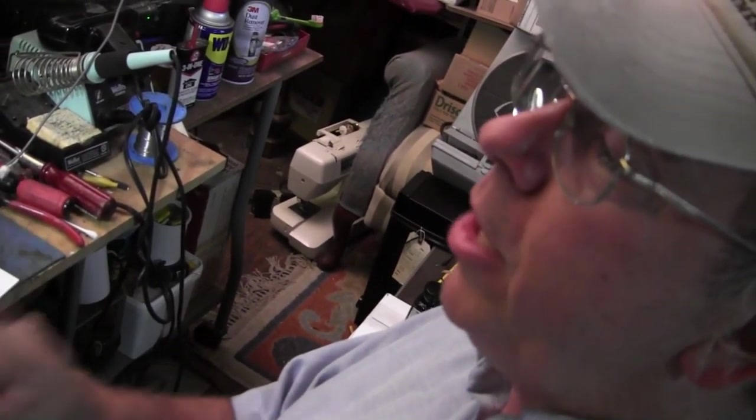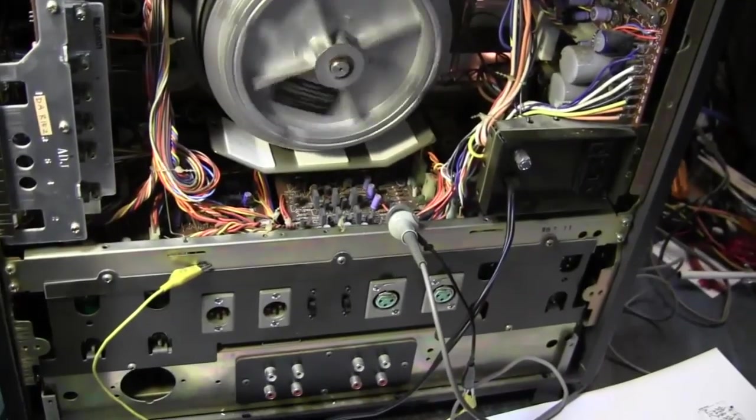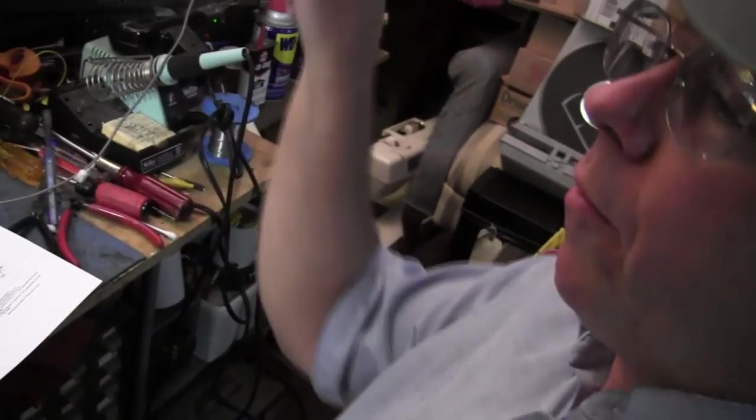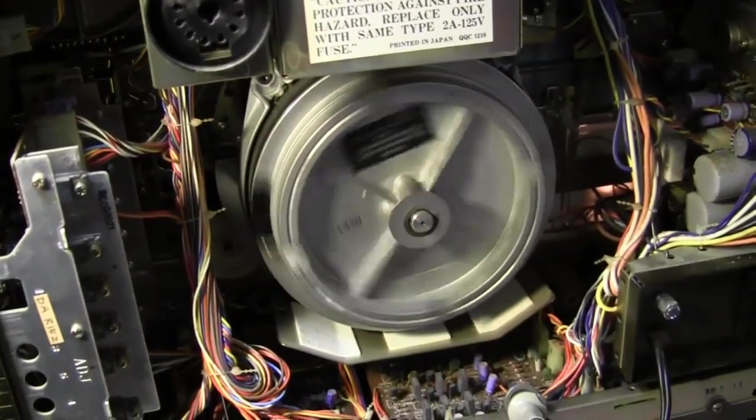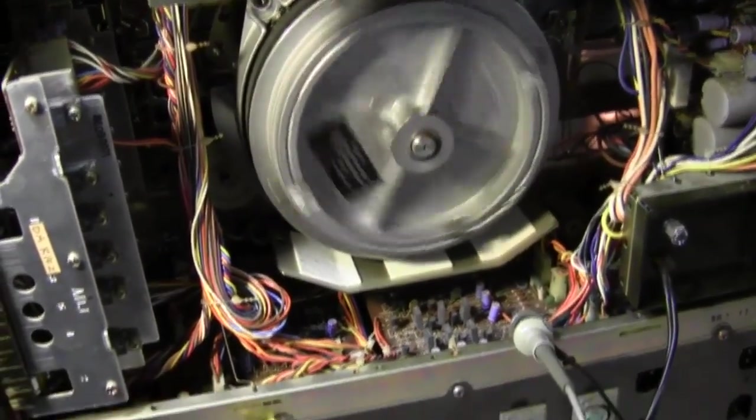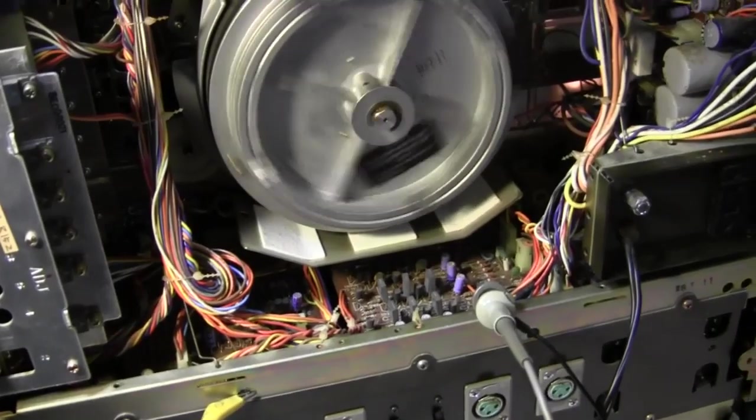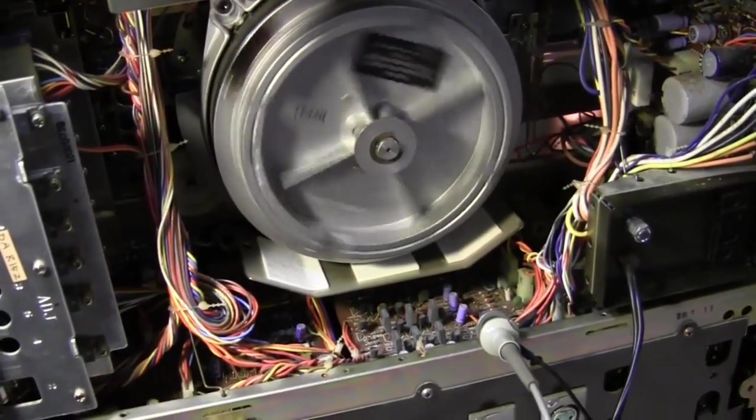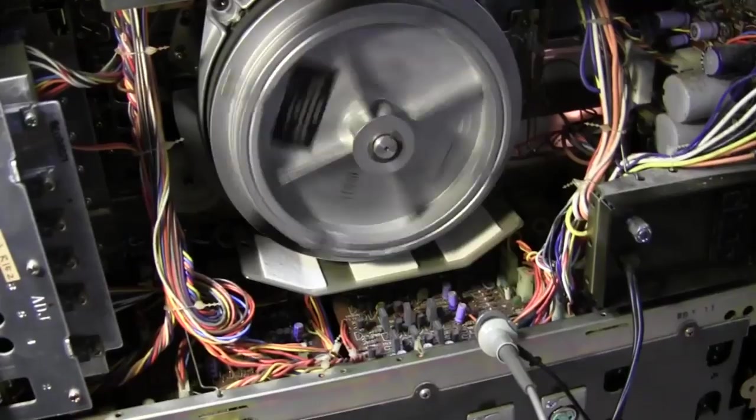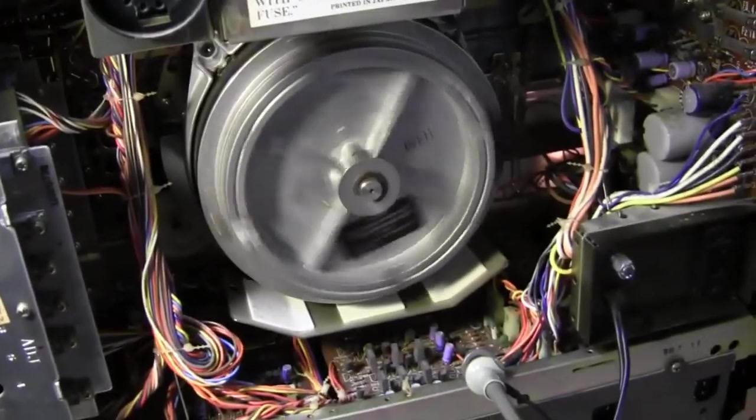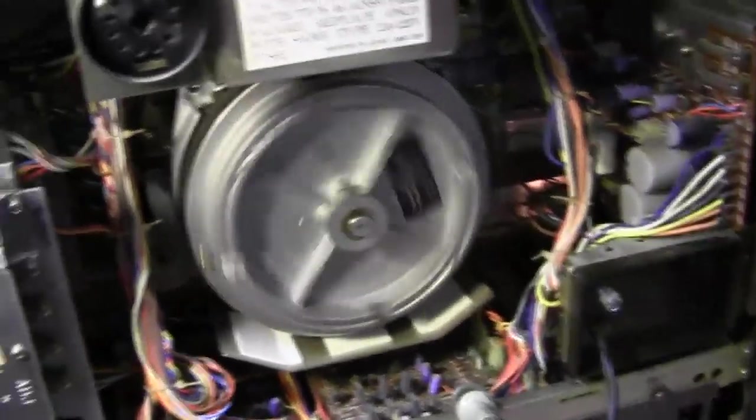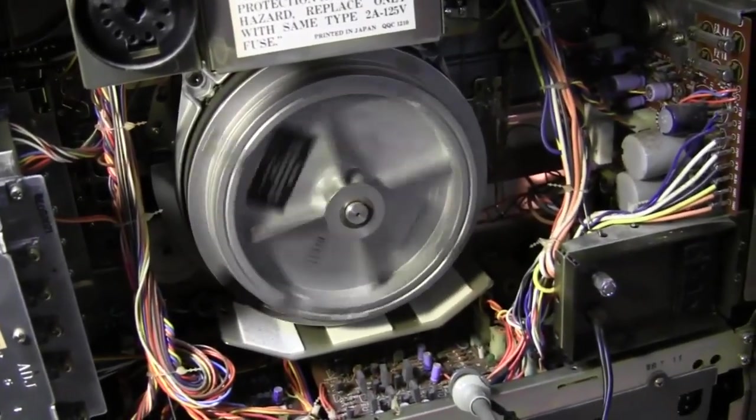You have a lot of control doing that. This machine has a wow and flutter spec that's like .00 something. Just almost no wow and flutter. These were considered a big deal. This would have been a thousand dollar tape deck, which by today's money in 1978 would have been five or six thousand dollars. Very, very high tech. Highly desirable.